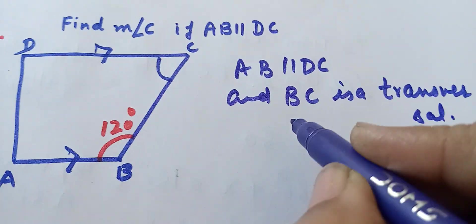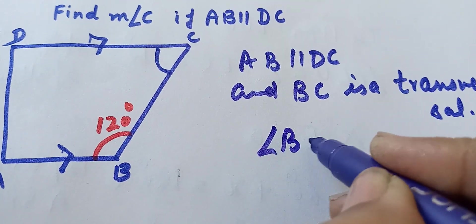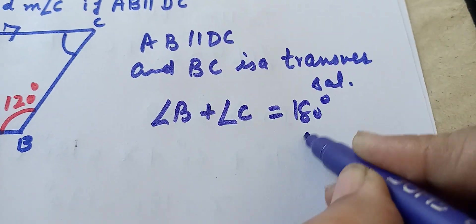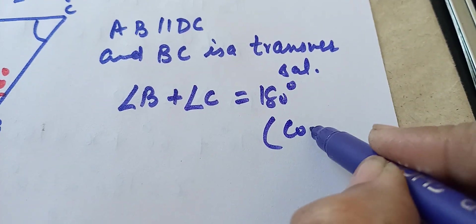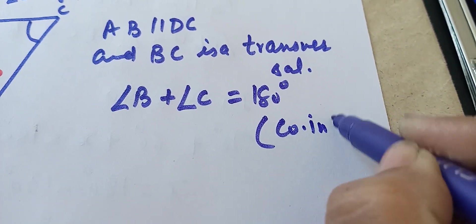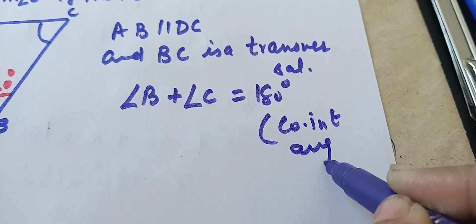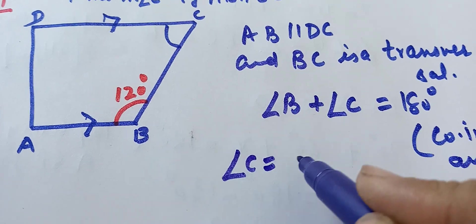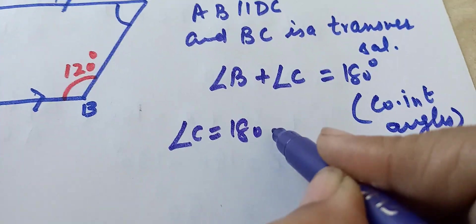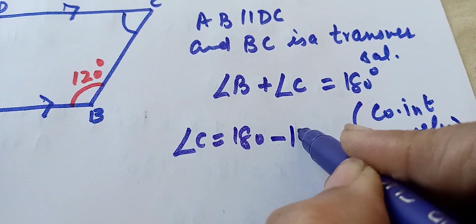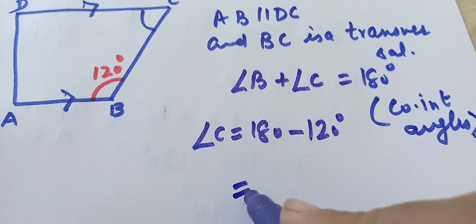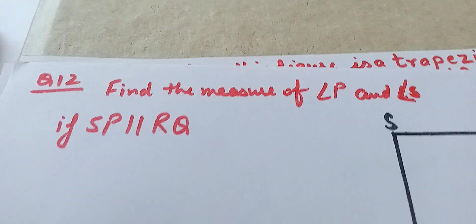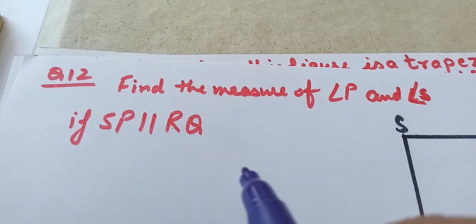The sum of angle D plus angle C will be 180 degrees — these are co-interior angles, and co-interior angles are supplementary. So angle C will be 180 minus 120 degrees, that is 60 degrees.